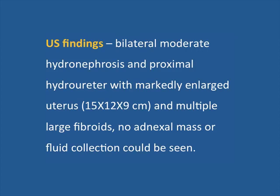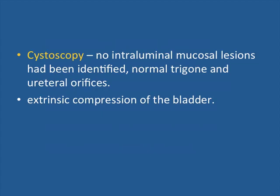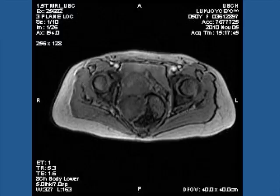In summary of the ultrasound findings: bilateral moderate hydronephrosis with proximal hydroureter, markedly enlarged uterus with multiple large fibroids, without adnexal masses or fluid collection. She had a cystoscopy — the urethra was quite intact, there were no intraluminal mucosal lesions, there was a normal trigone and normal ureteral orifices. There was an impression of extensive compression of the bladder.